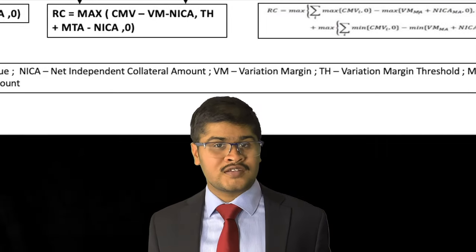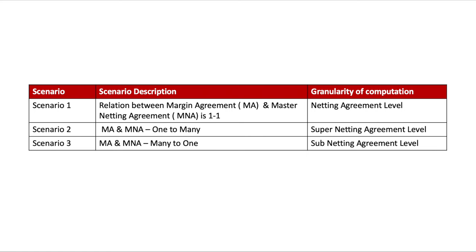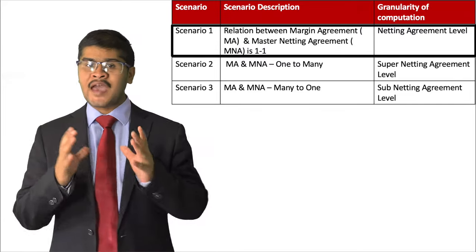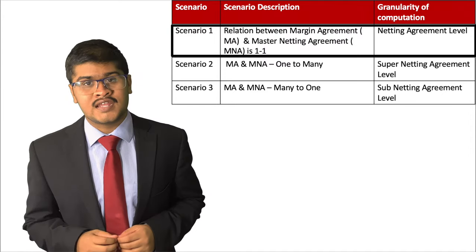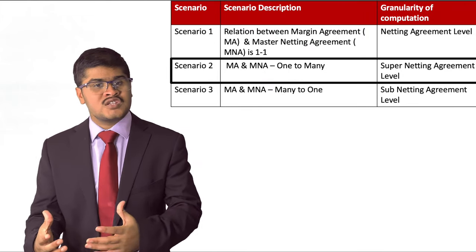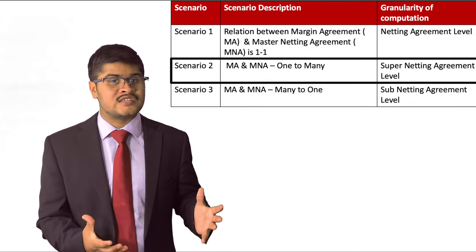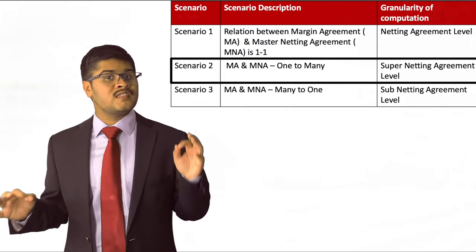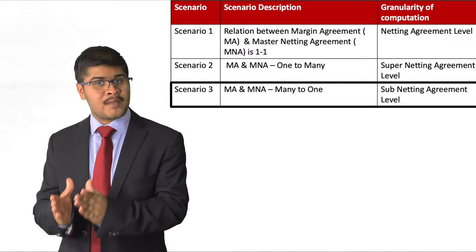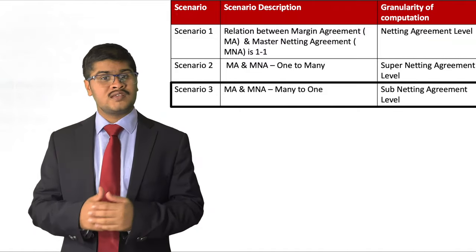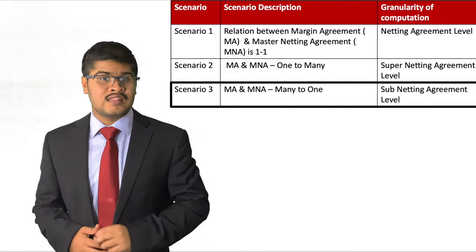Before moving on to the PFE computation, let us understand the granularity of computation. Effectively, computation happens at the margin agreement level. If the relation between margin agreement and master netting agreement is one-to-one, then the computation is at netting agreement level. If the relation of MA and MNA is one-to-many, then the computation is referred to as super netting level. And lastly, if the relation between MA and MNA is many-to-one, then the computation is referred to as sub netting level.